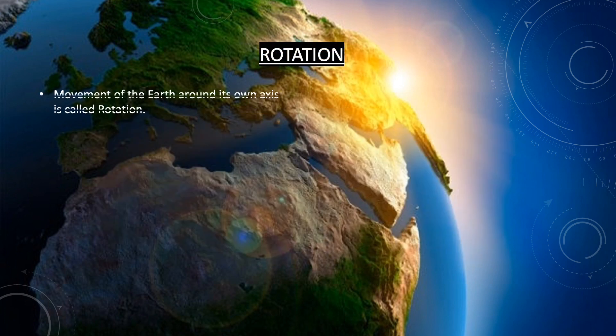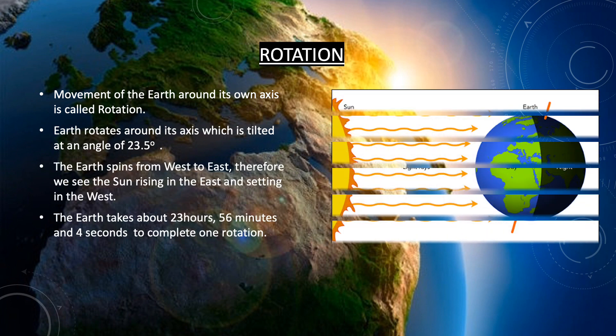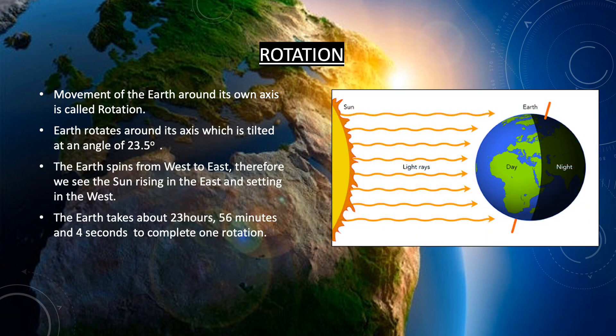Rotation. Movement of the earth around its own axis is called rotation. Our earth is basically tilted at an angle of 23.5 degrees, so it rotates around its axis which is tilted at this particular angle. The earth spins from west to east, therefore we see the sun rising in the east and setting in the west.